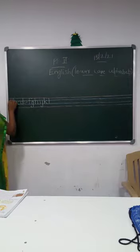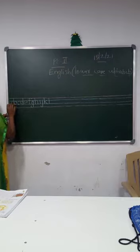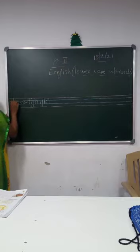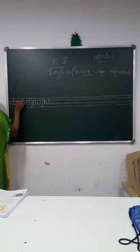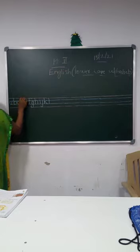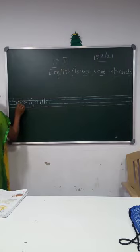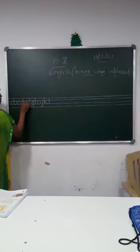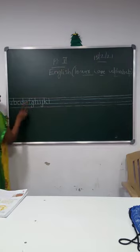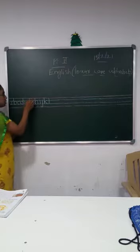Letter A: left curve, go up, come down, touch the blue line. Letter B: standing line, right curve. Letter C: left curve. Letter D: standing line, left curve. Letter E: sleeping line, left curve.